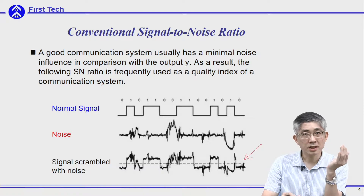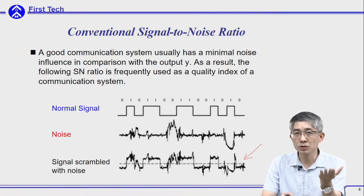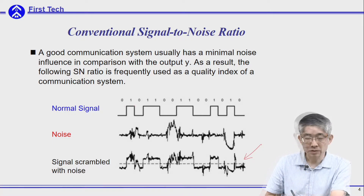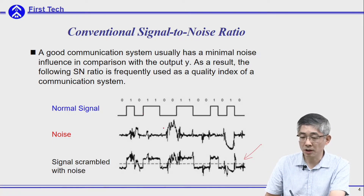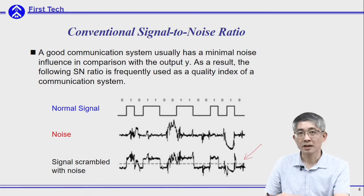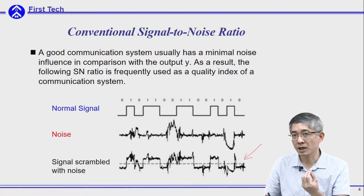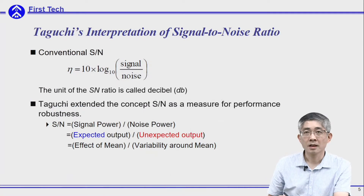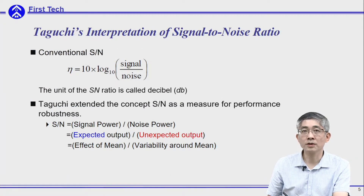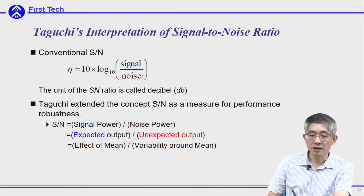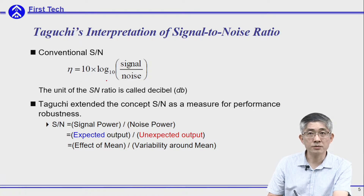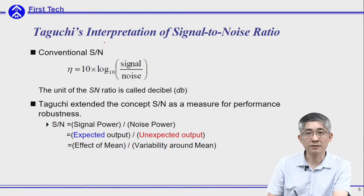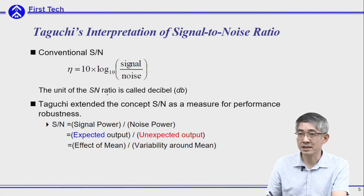Therefore, the signal-over-noise ratio is used to determine how good your design is. If the power of the signal is much larger than the power of the noise, then your signal will not be scrambled by the noise. This is the conventional definition of signal-over-noise ratio: you take the signal power over noise power, apply a logarithm transformation, and multiply by 10. The unit of the SN ratio is called the decibel, dB.